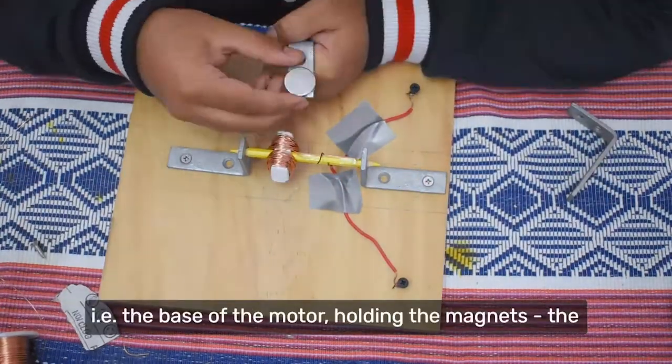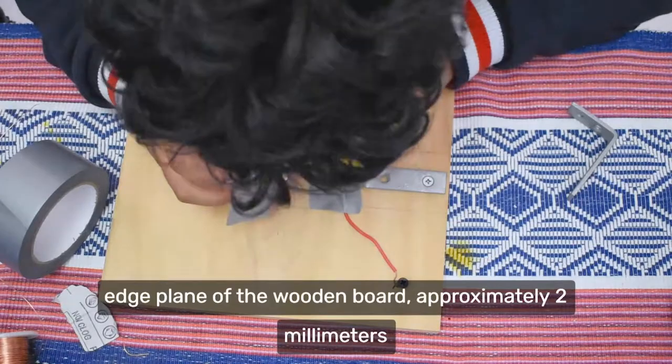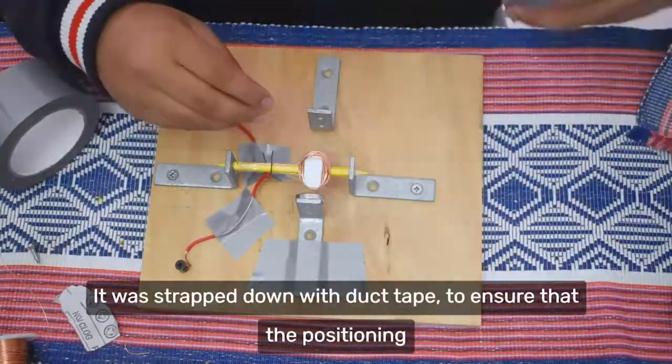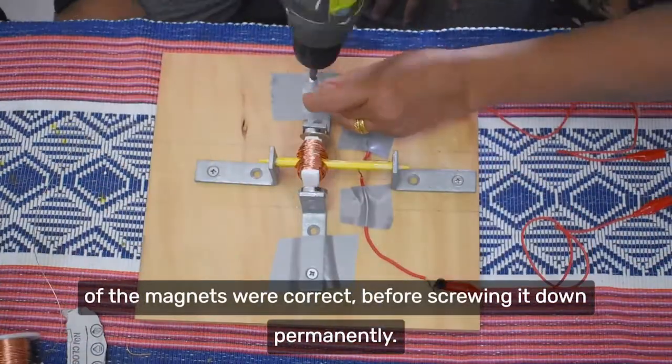7. For the stator, i.e. the base of the motor holding the magnets, the other pair of angled brackets were placed along the short edge plane of the wooden board, approximately 2mm away from the edge of the copper coil turn. It was strapped down with duct tape to ensure that the positioning of the magnets were correct before screwing it down permanently.